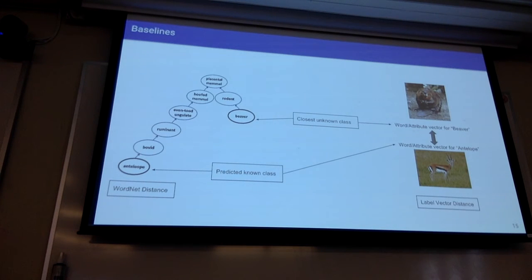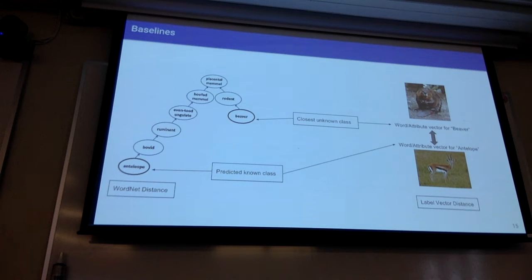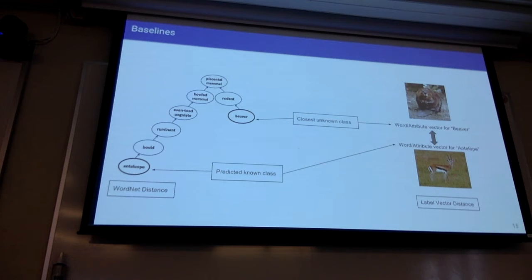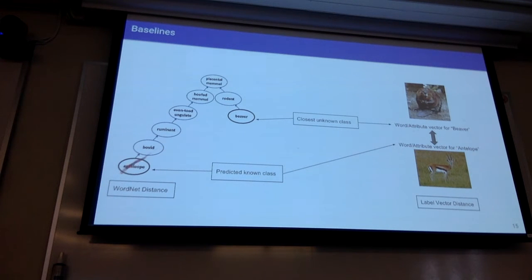To evaluate our model, we considered several baselines. Given an image of an unknown class, we apply all known classifiers on it, and it might tell us it's a deer or antelope — which is wrong, since it wasn't trained on unknown classes. So we calculate the distance between this predicted known class and all unknown classes, and whichever unknown class is closest is taken as the label. We calculate this distance based on word vectors, attribute vectors, or WordNet distance — a tree-based hierarchy where you can tell whether two classes are similar based on their hierarchical distance.